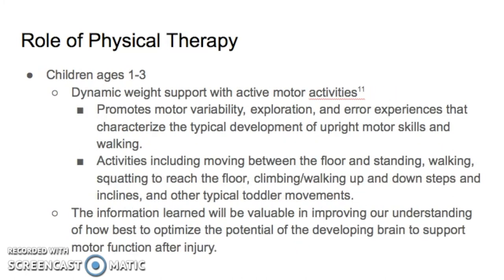A second study by Prosser et al. also looked at improving motor function of children ages 1 to 3. They used dynamic weight support with motor activity, promoting motor variability, exploration, and error experiences that characterized the typical development of upright motor skills in walking. Activities included moving between the floor and standing, squatting, walking, climbing, walking up steps and inclines, and other typical toddler movements. The information learned will be valuable in improving our understanding of how to best optimize the potential of the developing brain to support motor function after an injury.